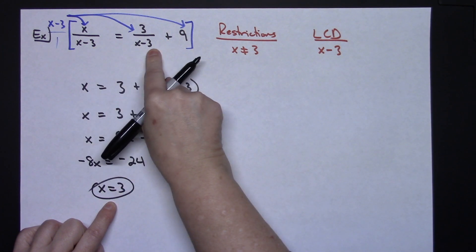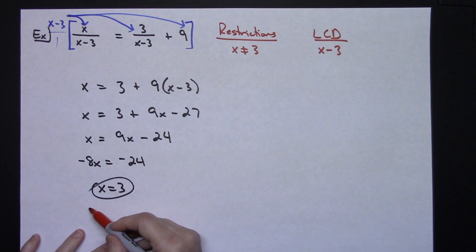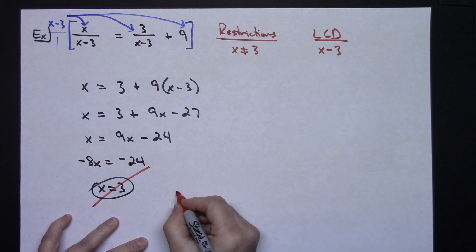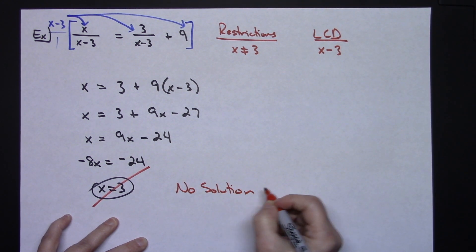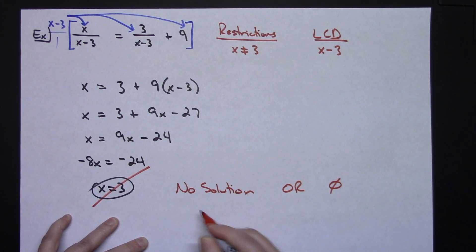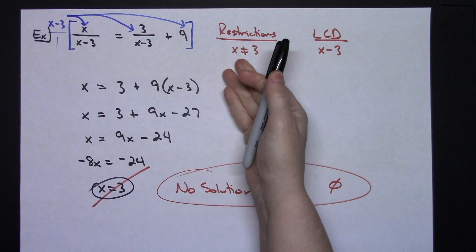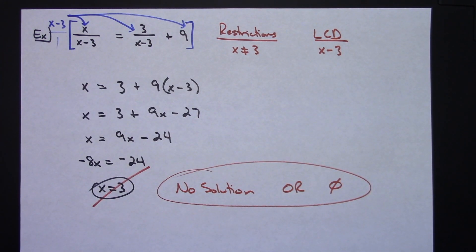So in this scenario I don't even have to do a check — this violates my original restriction. Therefore this one has to be no solution, which you can write out in words or use set notation. So to summarize: always look for your restrictions, find the least common denominator to eliminate fractions, and check your answer in the original equation.